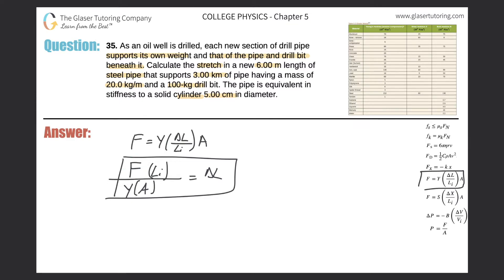They told us that every new section of pipe supports its own weight and that of the pipe and drill bit beneath it. So we added a new six meter length. Then it's supporting not only itself at six meters but three kilometers of pipe. I know I have different units, this is meters and now I have kilometers, so just convert this right away to meters. Three kilometers is three thousand meters. When I add these two up I realize that I have three thousand six meters total of pipe.